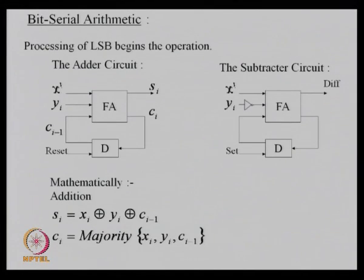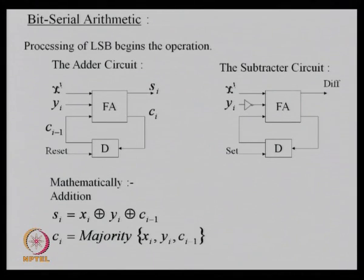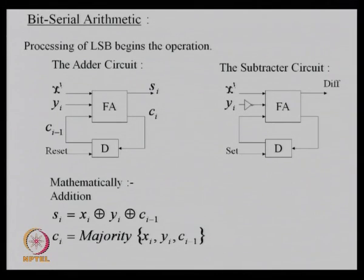A typical bit serial hardware is relatively simple: a full adder circuit receives inputs x_i and y_i and produces an output s_i and carry out c_i. The first bits are entered, a carry is generated, and this carry must be fed back for the next input bits x_1, y_1. Since one clock cycle is needed to enter the next bits, the carry is delayed through a flip-flop so it aligns with the next inputs, and this process continues as long as data appears at the input.